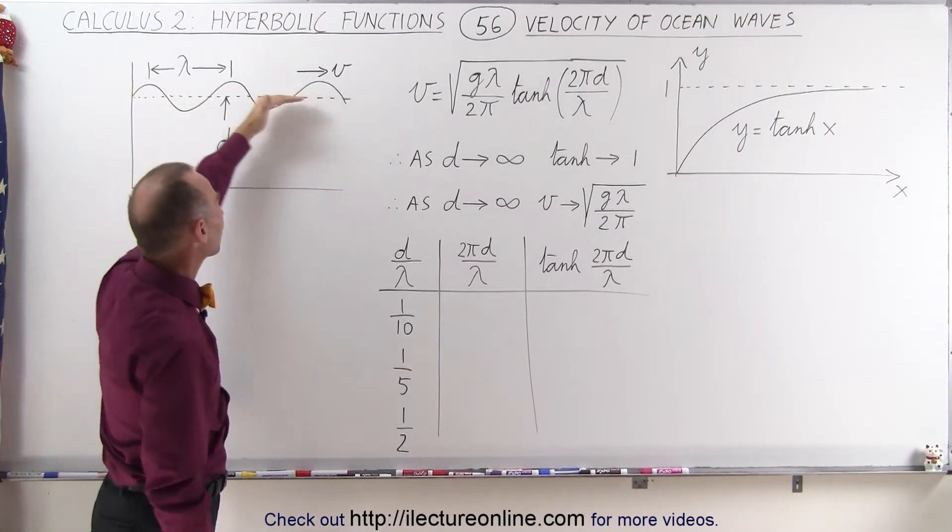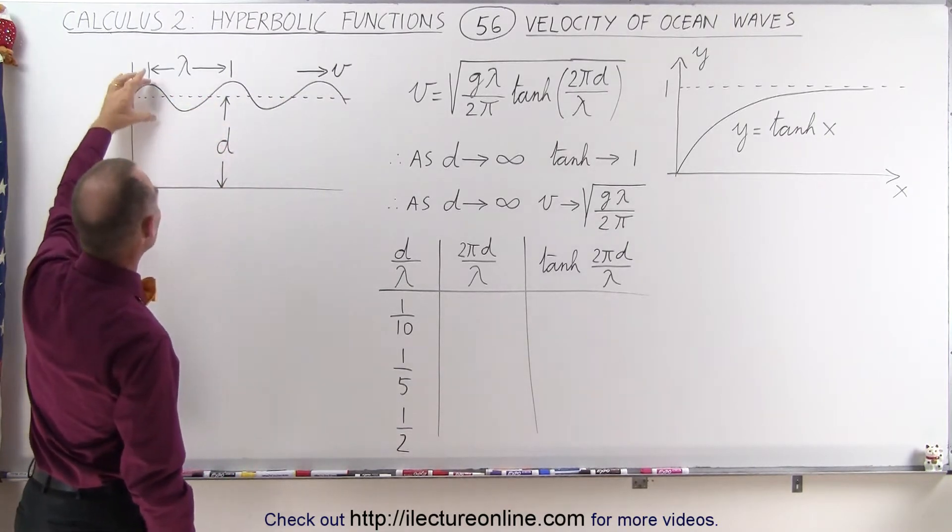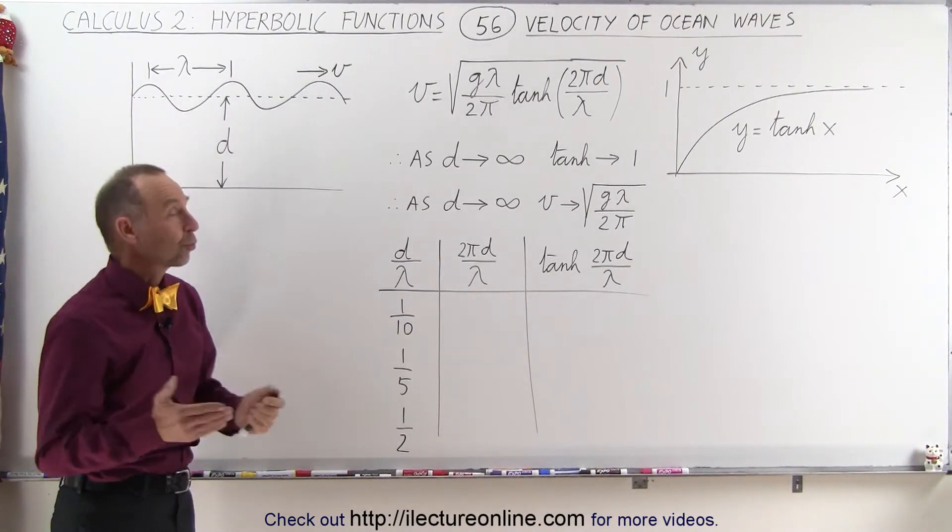The speed will be the velocity of the waves, and then this will be the average depth. That would be the average point between the crest and the trough of a wave.